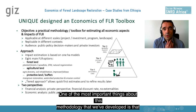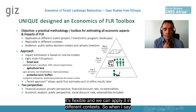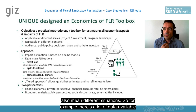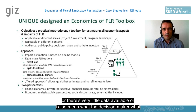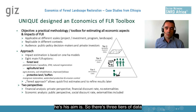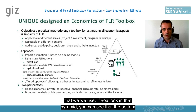One of the most important things about this methodology that we've developed is that it's flexible and we can apply it in different contexts. By flexible, I mean different landscapes but also different situations — for example, when there's a lot of data available or very little data available, or what the decision maker's aim is. So we've developed three tiers of data that we use.